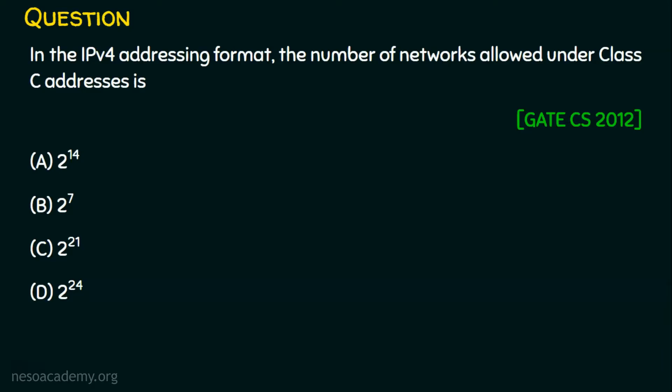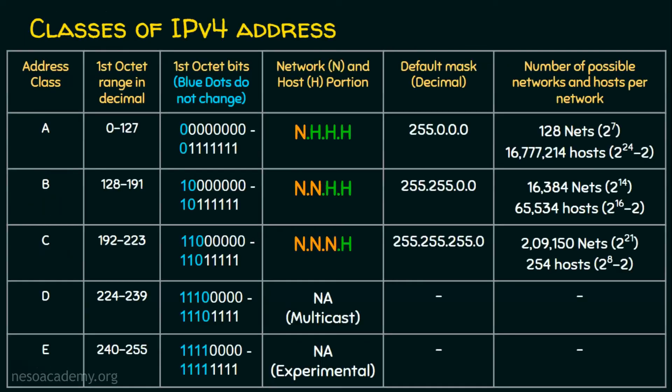Let's see the tabular column which we had seen in the earlier lectures. This is the classes of IP addresses. We have five classes of IP addresses: Class A, B, C, D, and E.